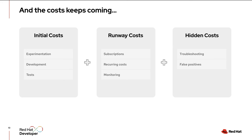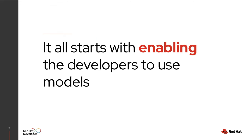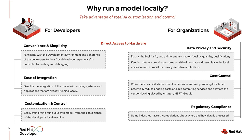Once an application goes into production and tons of users start using it, those costs can essentially grow exponentially. Thanks to new technologies in the open source world — like llama.cpp and frameworks that work on top of it like Ollama — we can quickly set up and start working with generative AI in our local environments. This lets us take a model from Hugging Face, start a model server with llama.cpp, package that into a container, and scale and increase the portability of that model just like we do with applications. Running a model locally mainly comes down to customization and control.